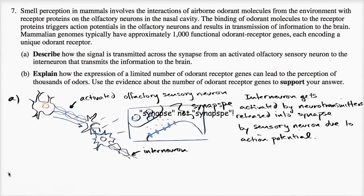Alright, let's do part B. Explain how the expression of a limited number of odorant receptor genes, you see there's a thousand receptor genes, can lead to the perception of thousands of odors. Use the evidence about the number of odorant receptor genes to support your answer.